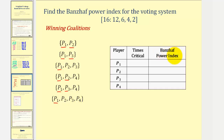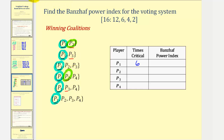Now to find the Banzhaf Power Index, we'll first count the number of times each player is critical. Player one is critical six times. Player two is critical two times. Player three is critical two times, and player four is critical zero times. The total number of times any player is critical is six plus two plus two plus zero, which is ten. Therefore, the Banzhaf Power Index for player one is six divided by ten, or three-fifths, which is 0.6 or sixty percent. For player two, the power index is two divided by ten, or one-fifth, which is equal to twenty percent.